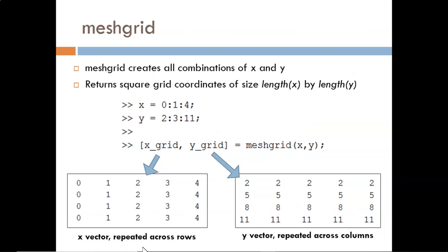First, X and Y are declared as incremented vectors. So, in this example, X is a vector holding 0, 1, 2, 3, and 4. Y is a vector holding 2, 5, 8, and 11.